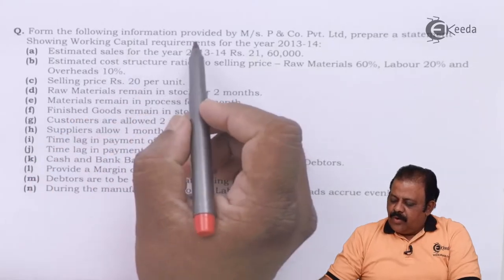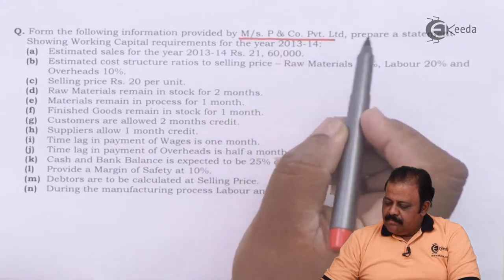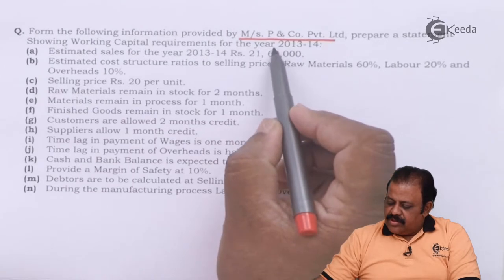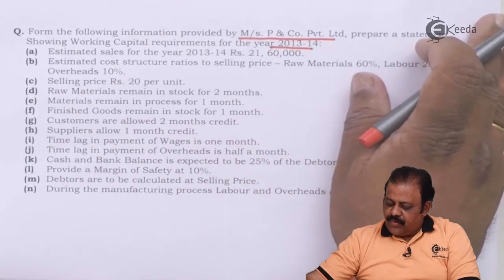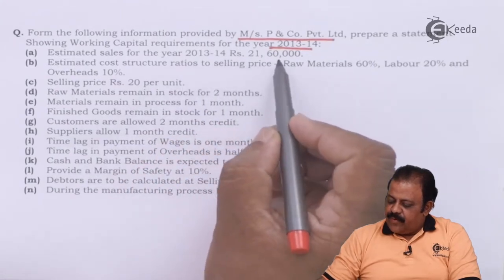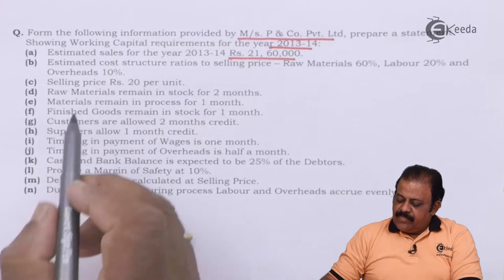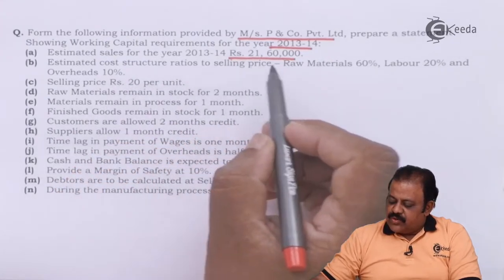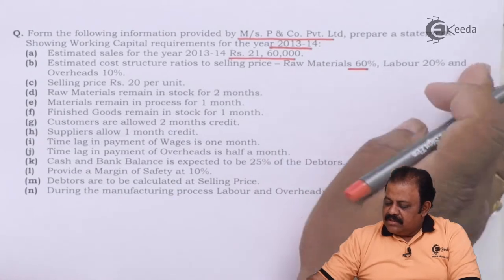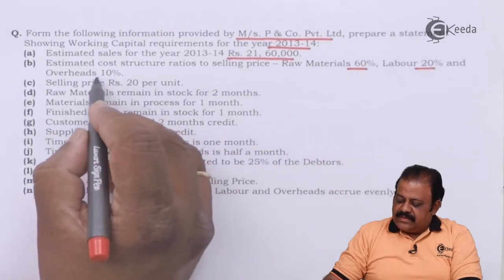From the following information provided by P and Company Limited, prepare a statement showing working capital requirement for the year 2013-14. Estimated sales for 2013-14: rupees 21 lakh 60,000. Estimated cost structure ratios to selling price: raw material 60%, labour 20%, and overheads 10%.